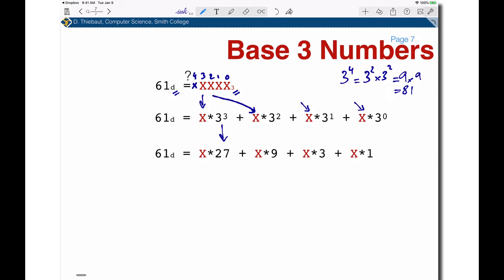3³ = 27, which is less than 61. Could it be 1 or 2? I'll try the largest—always go for the largest. 2×27 = 54, which is less than 61. So 61 = 2×27 + y, where y = 61 - 54 = 7.